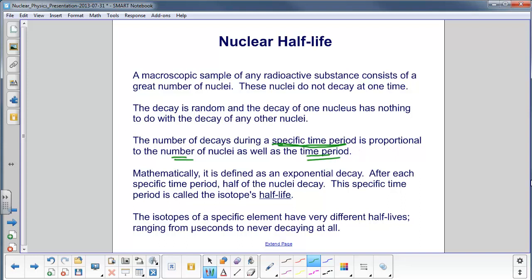Mathematically, it's defined as an exponential decay. For example, if I have a graph like this and I start out with so many nuclei, it decays very fast in the beginning and then kind of tapers off like that. That's an exponential decay.